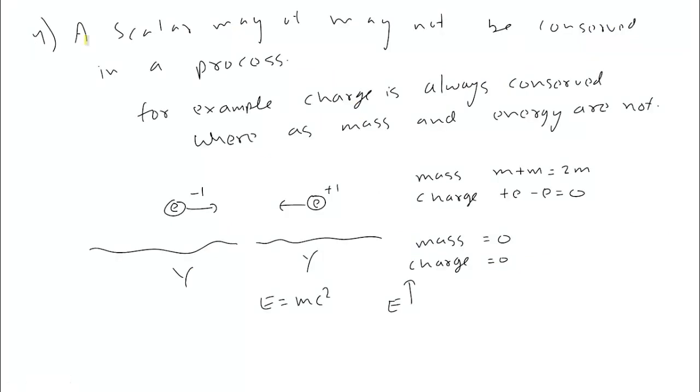Next property: A scalar may or may not be conserved in a process. It can be conserved or not conserved in a process.